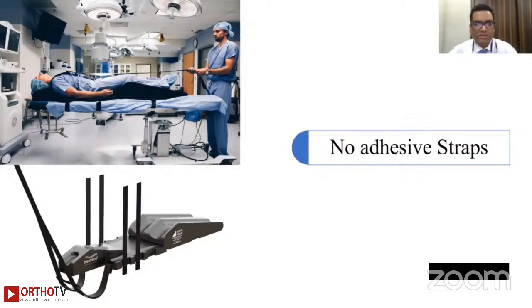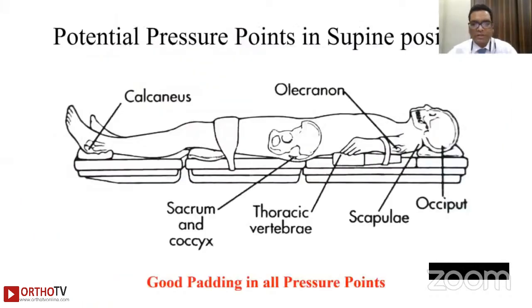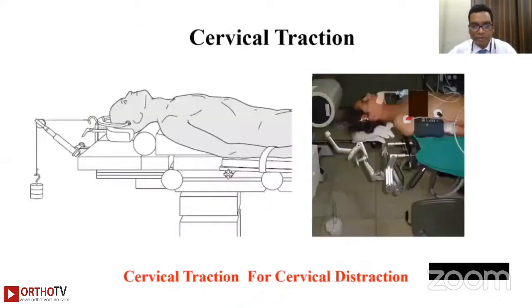Longitudinal shoulder traction should be applied with surgical tape to visualize all levels on fluoroscopy, while avoiding excessive traction. Arms should be along the side and tucked, knees should be flexed with a pillow under them. Key pressure points to pad in supine position include the calcaneum, olecranon, sacrum, thoracic vertebrae, scapula, and occiput.